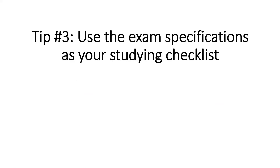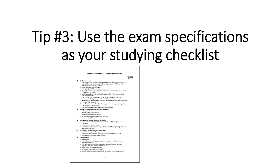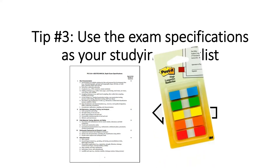Tip number three: use the exam specifications as your studying checklist. The specification sheet — this document — gives you a precise breakdown of what to expect on the exam. When you're studying, use it as a checklist for what topics to go over. If there's a topic not addressed in the references you're studying, it's a good sign you should purchase or download another textbook. You should have tabbed and highlighted sections corresponding to each topic listed in the exam specifications. I'd encourage you to use post-it tabs and an ultra-fine Sharpie when making your tabs.